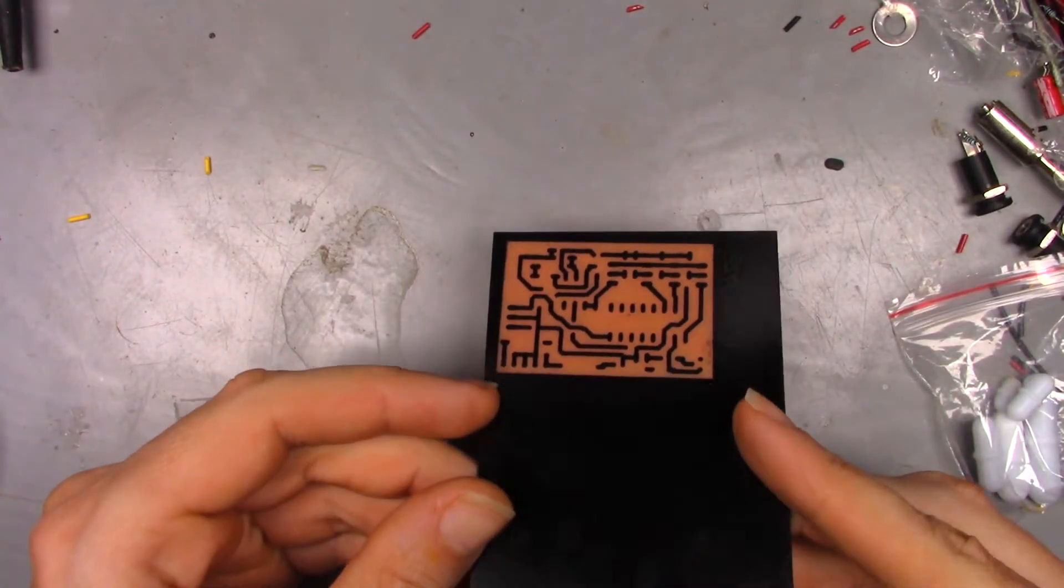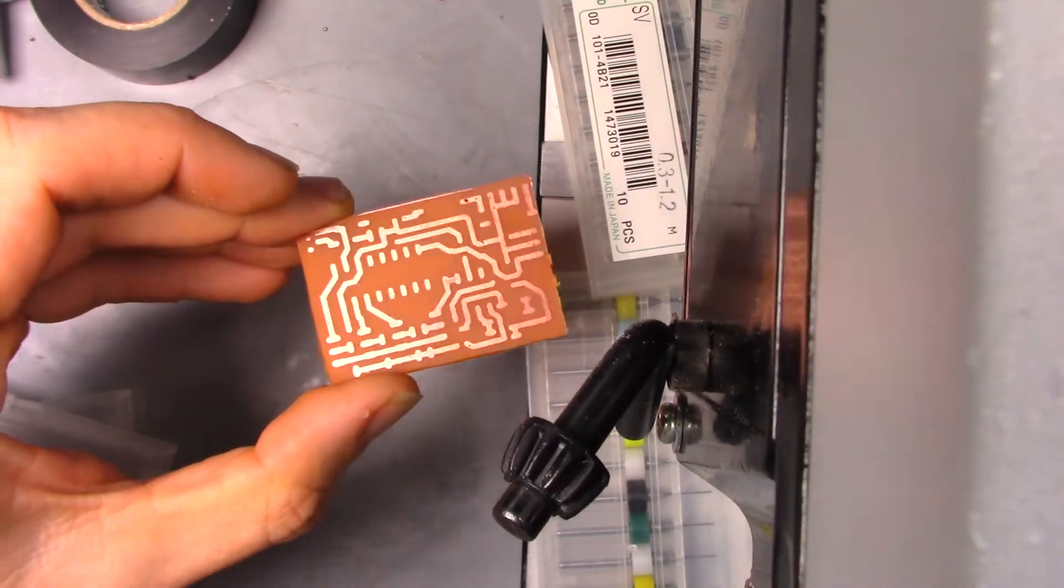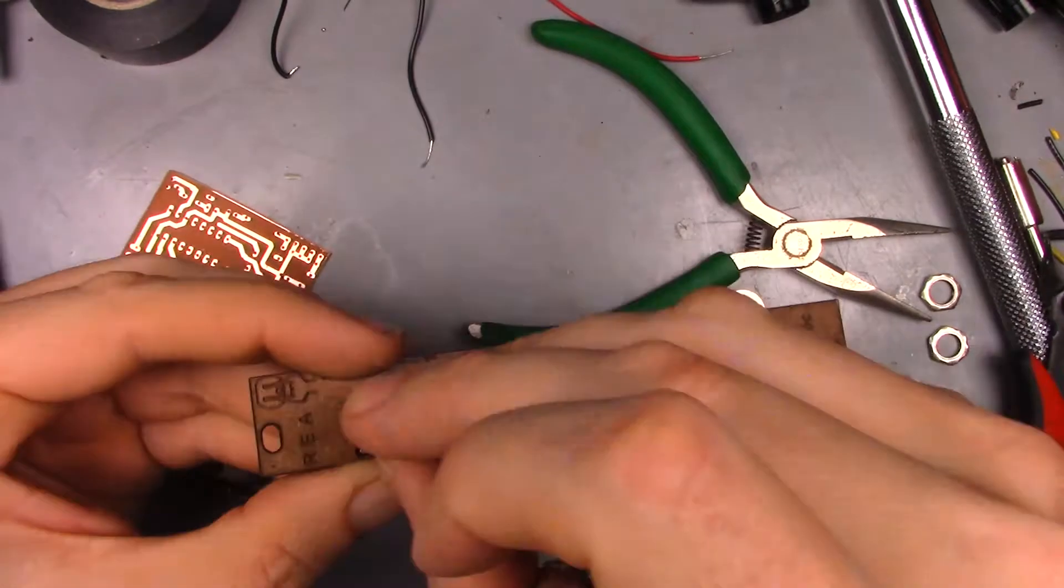And with the board etched, it's time to trim it to size. Now to mount all the components to the faceplate.